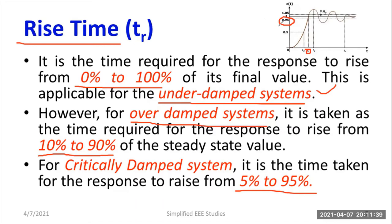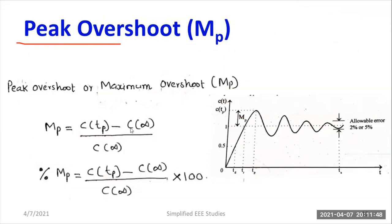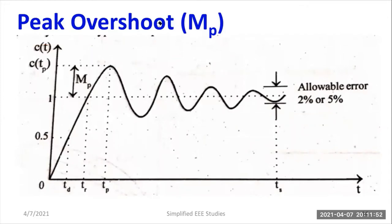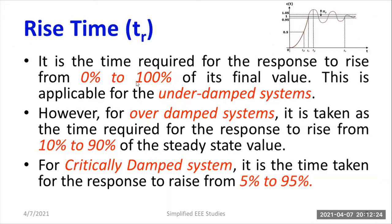Looking at the response diagram, rise time Tr is the time required to reach the value from 0 to 100% — where 1 represents 100% — for the steady state response, for an under-damped system. For over-damped and critically damped systems, the response percentage varies. Rise time is calculated using the formula: Tr = (pi minus theta) divided by omega_d. Theta is calculated as tan inverse of square root of (1 minus zeta squared) divided by zeta.